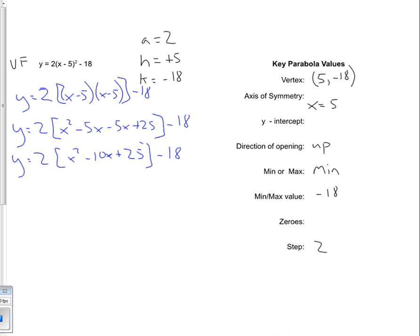Now, when your a value is something other than positive 1, then you actually have to multiply everything that's in the brackets by the coefficient out in front. So x squared minus 10x plus 25, that's all in brackets, and the coefficient is 2. So we're going to multiply each one of those three terms by 2.